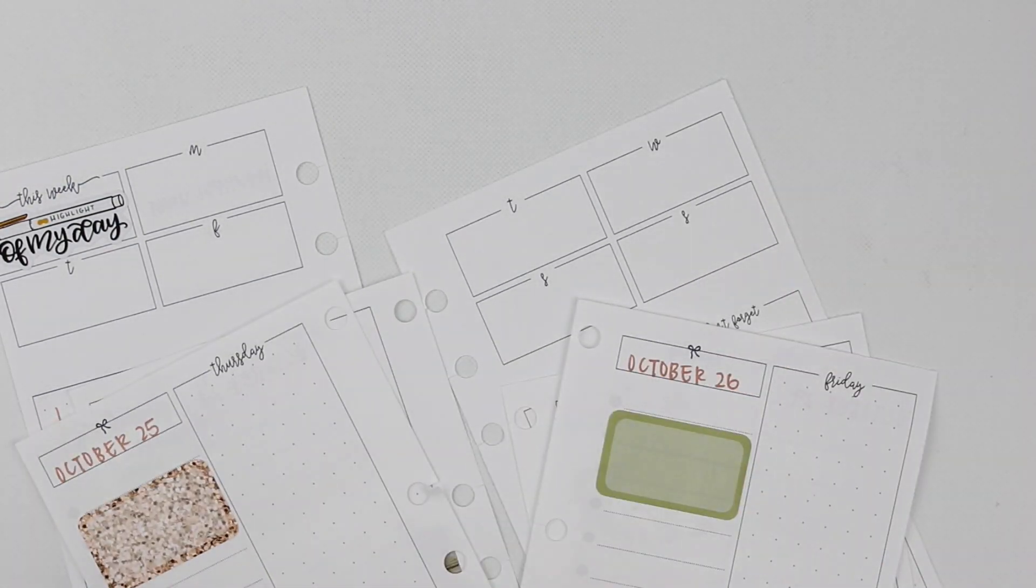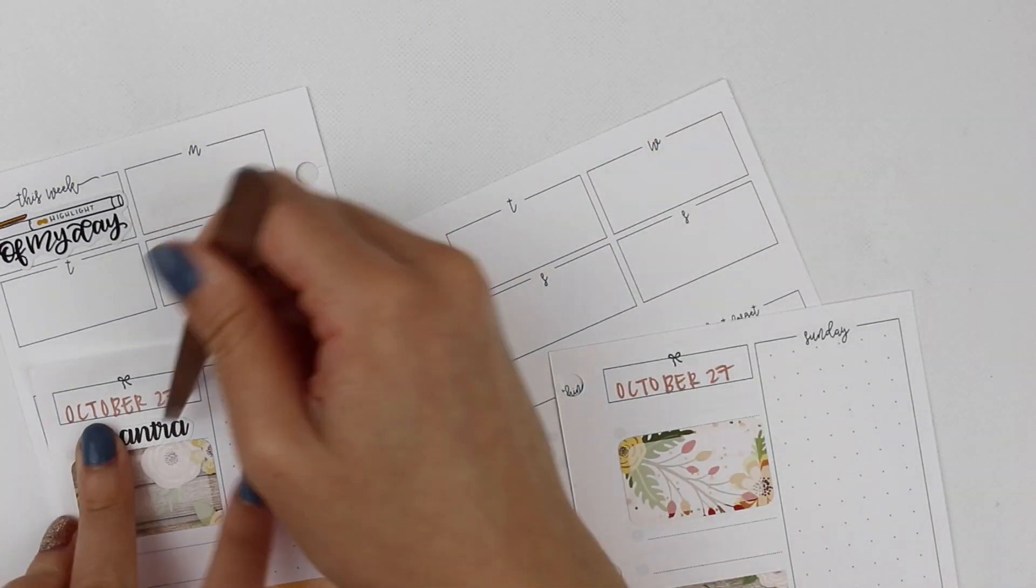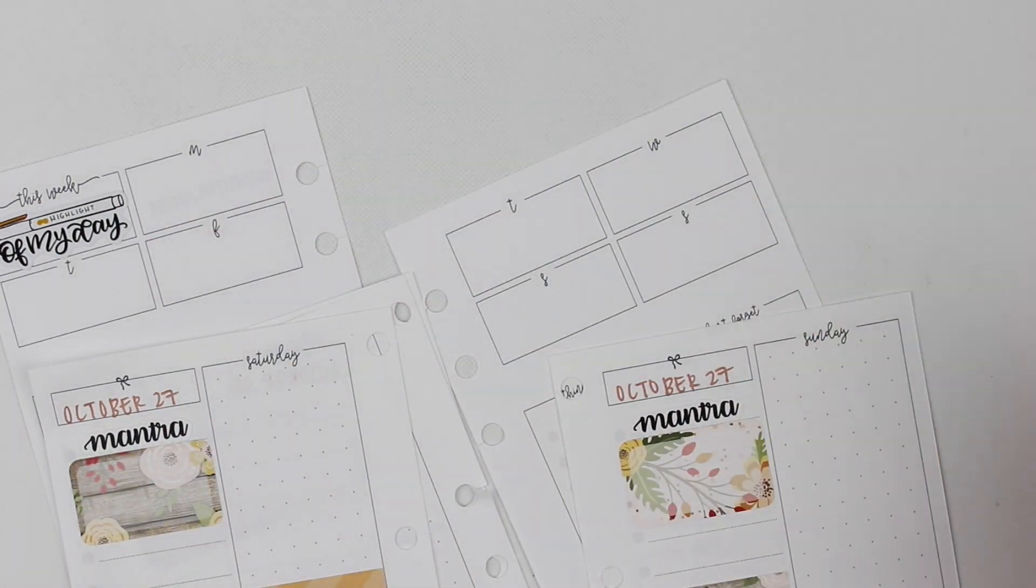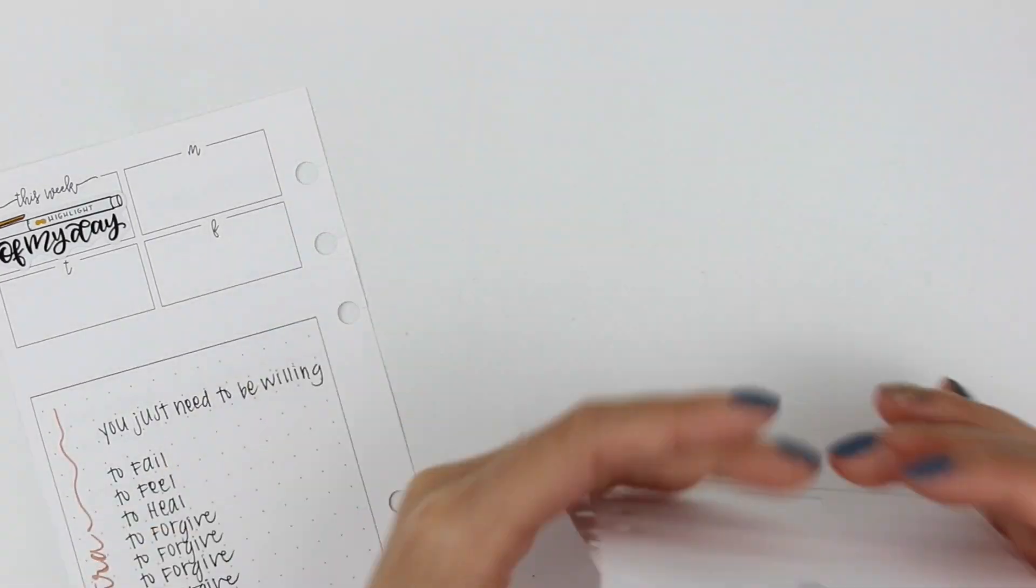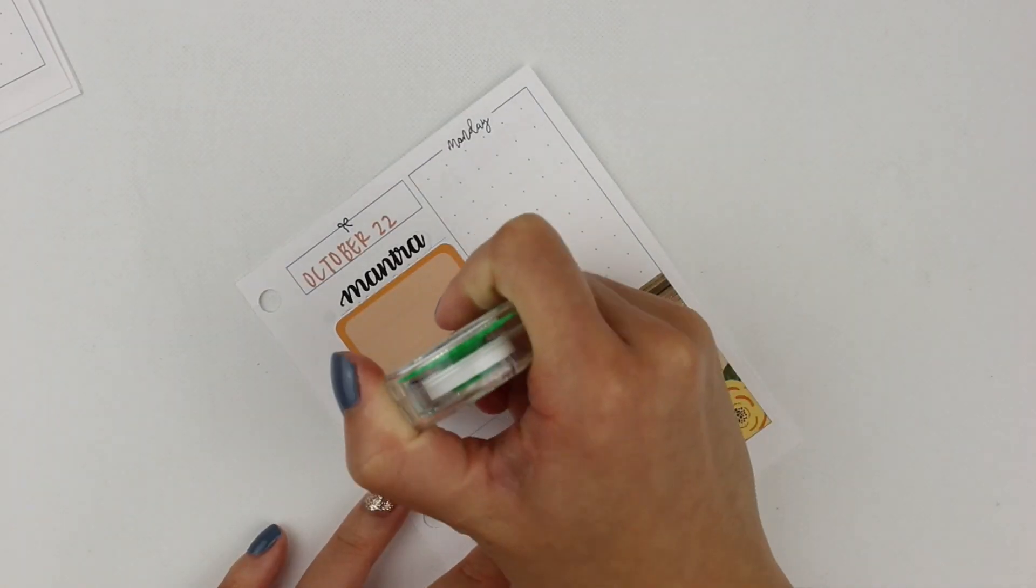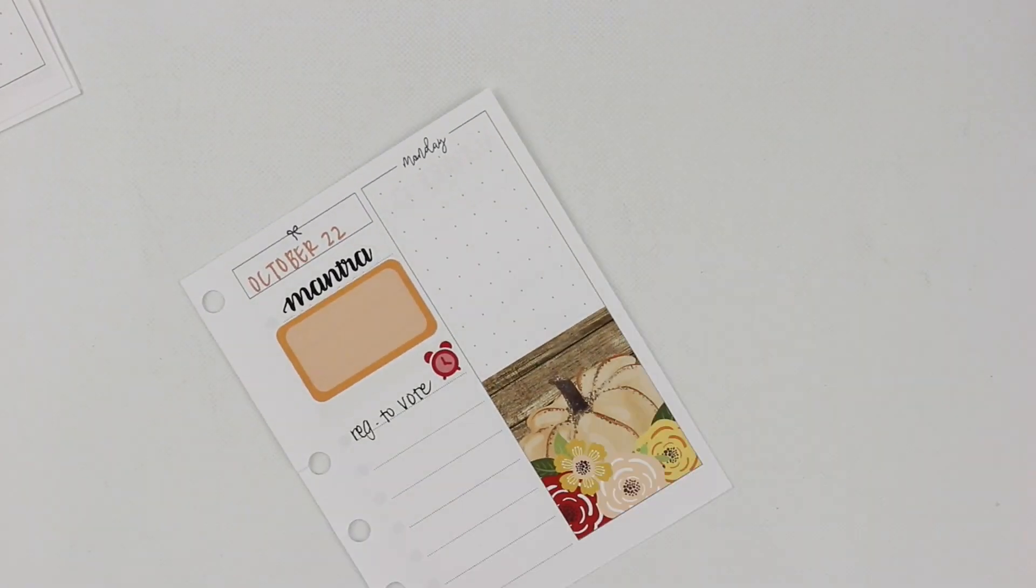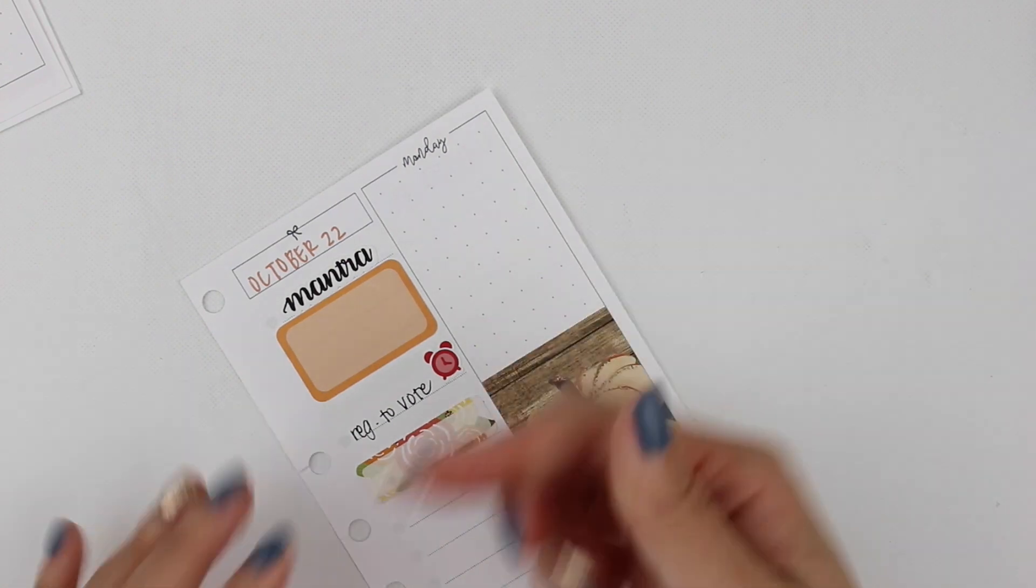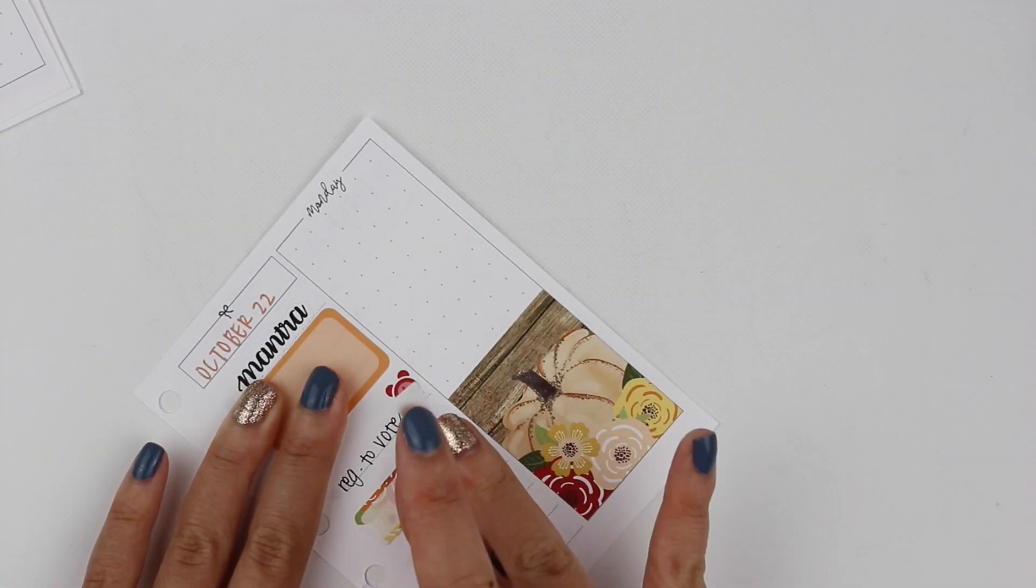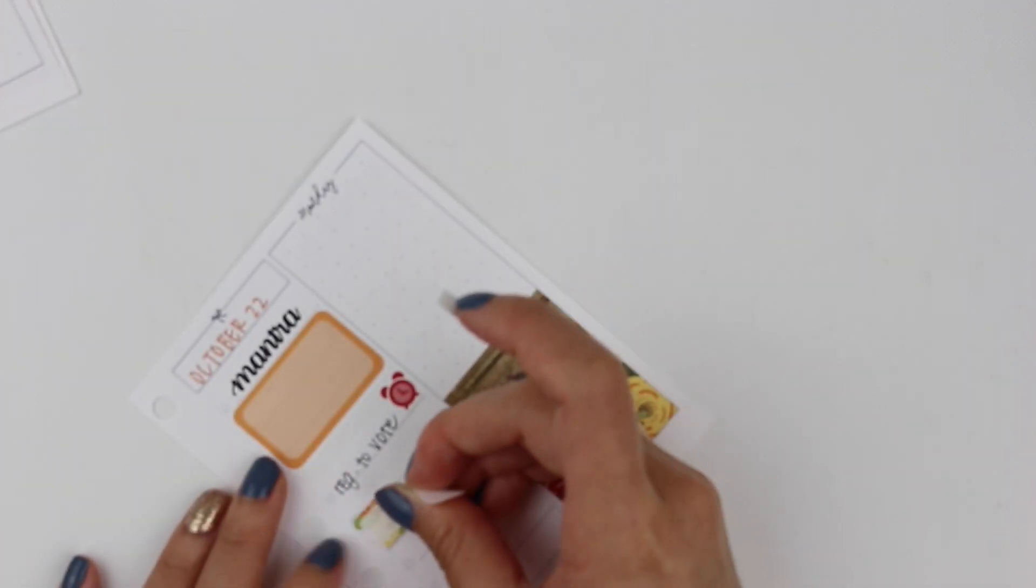Now I'm putting down the mantra stickers on every day. And the highlight of my day up at the top is from See Amy Draw. I like putting down a little highlight each day, and normally I will put my inserts back in my planner after I fill it out, and you can see the top throughout the entire week. So I really like that gratitude section there.